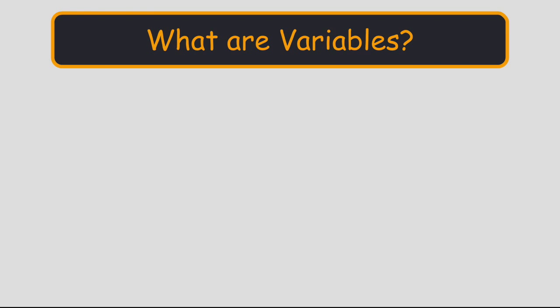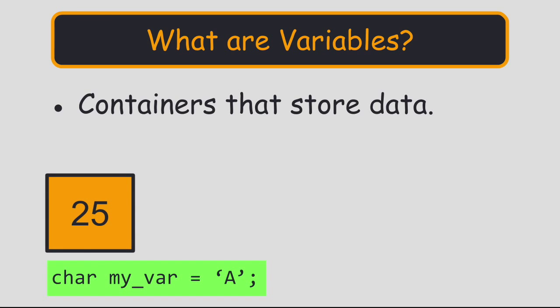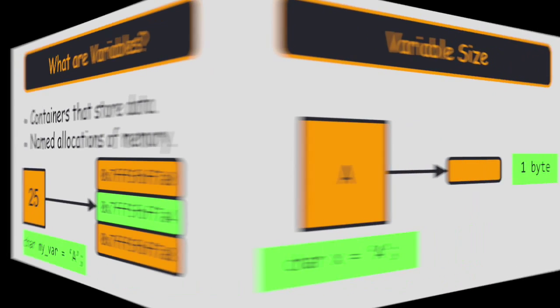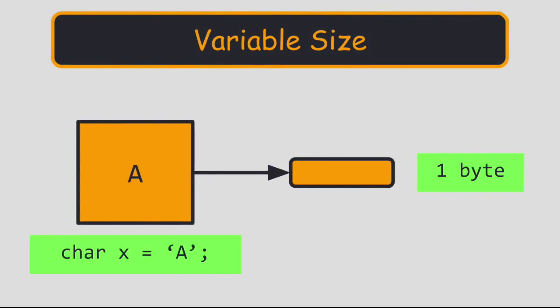At a high level, variables are containers that store data. At a low level, variables are named allocations of memory. If a variable is like a box, then a data type is like a box size, and the data is the content.